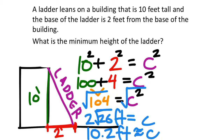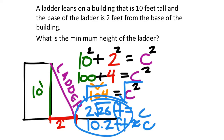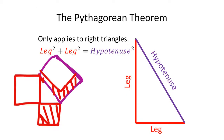So those two answers — the exact answer of √104 feet and the estimated answer of approximately 10.2 feet — are both good. The exact answer and the approximated decimal answer show the complete solution for this word problem.